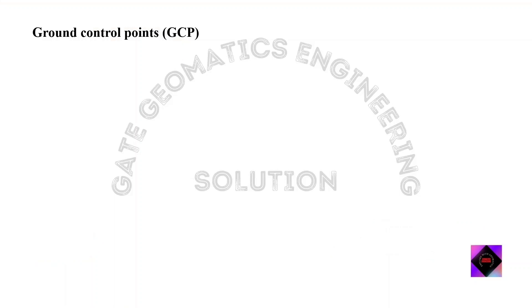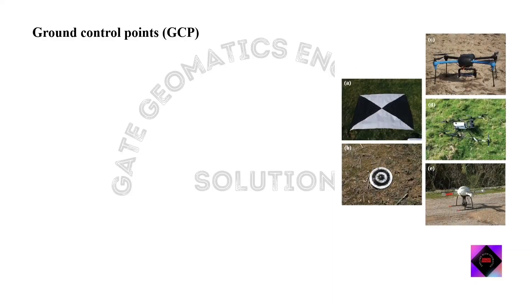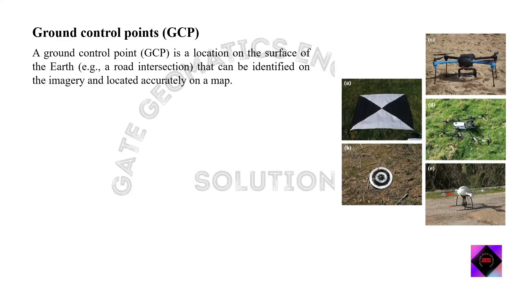We all know geometric distortions are introduced by sensors like pitch, roll, and yaw, which come under attitude error, and I have already discussed these in my previous video lecture. They all play a major role in creating geometric distortions in the imagery, which can only be corrected using ground control points. A ground control point is a location on the surface of the earth — either a road intersection, a building, or an electric pole — that can be identified on the imagery and located accurately on the map.